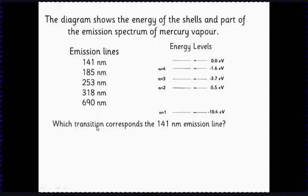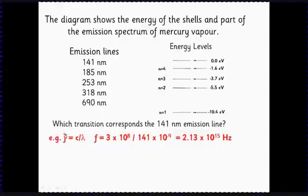First little job here is to work out the transition that corresponds to the 141 nanometer emission line. How are we going to do that? Well, the first thing we need to do is work out what energy that represents in terms of the photon. So we work out first of all the frequency, c over lambda. So f equals c, the speed of light, divided by the wavelength lambda.